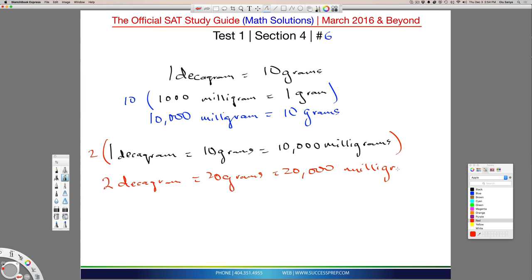Okay, so essentially, the question then is, what's the relationship between two decagrams and milligrams? Well, two decagrams is 20,000 milligrams. And that's the answer. The answer is D, 20,000.